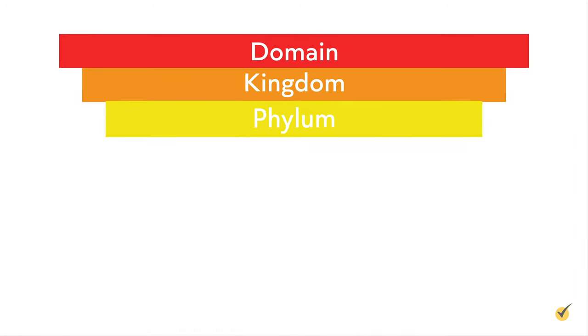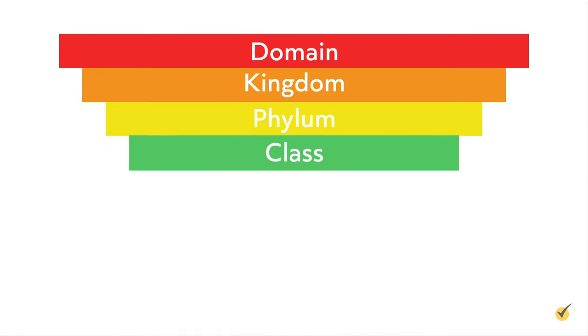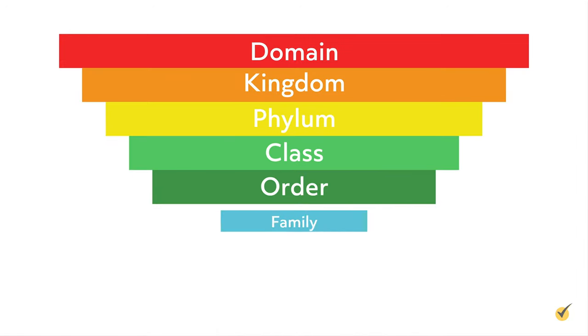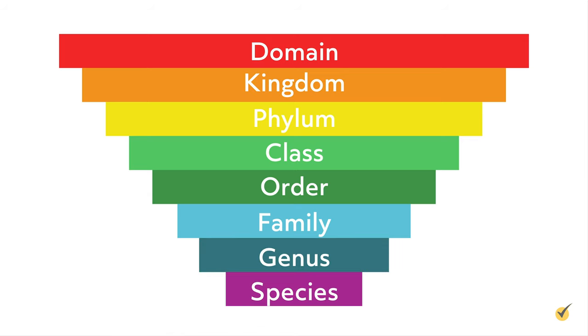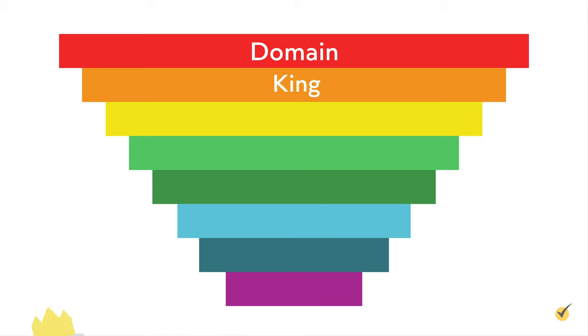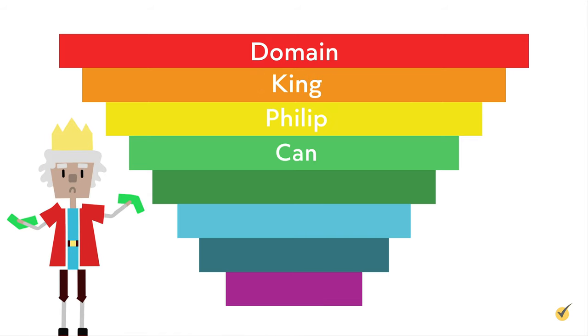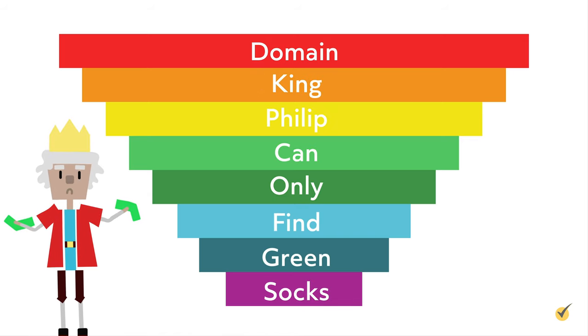Following the domain level, the classification system reads from least specific to most specific in the following order: kingdom, phylum, class, order, family, genus, and species. A mnemonic device often used to remember this order is: King Philip can only find green socks.